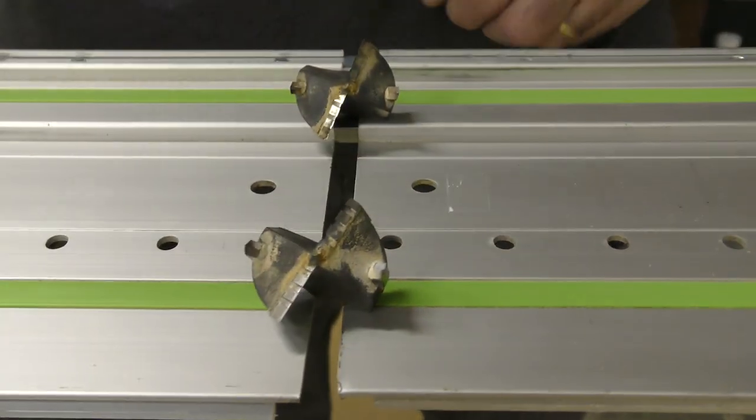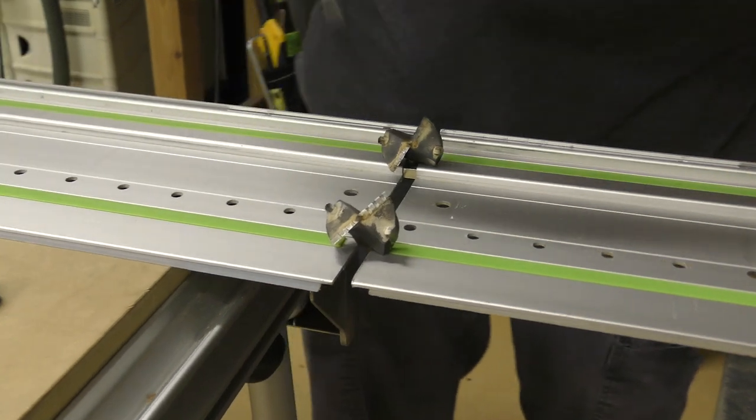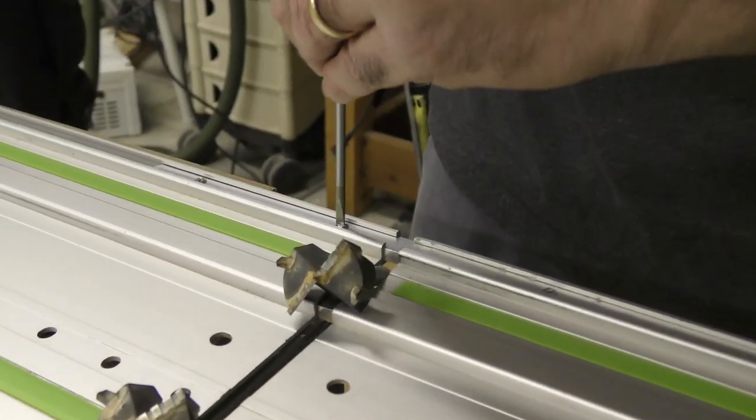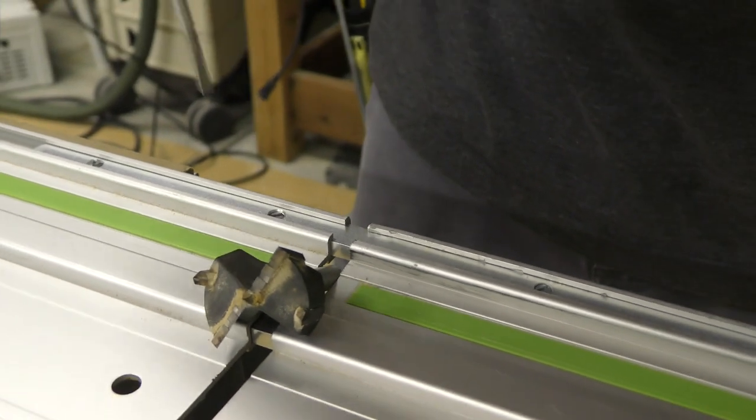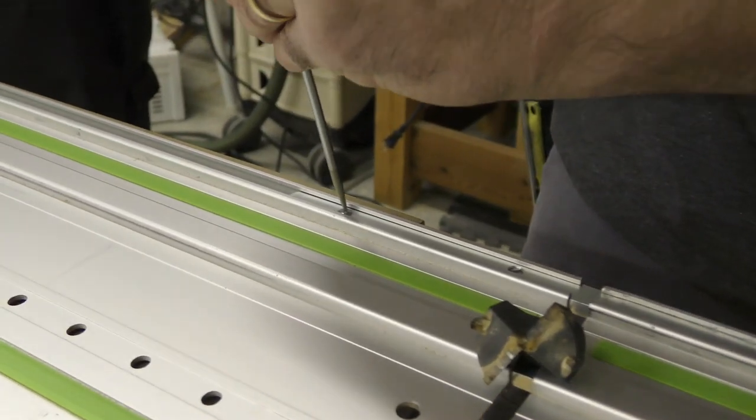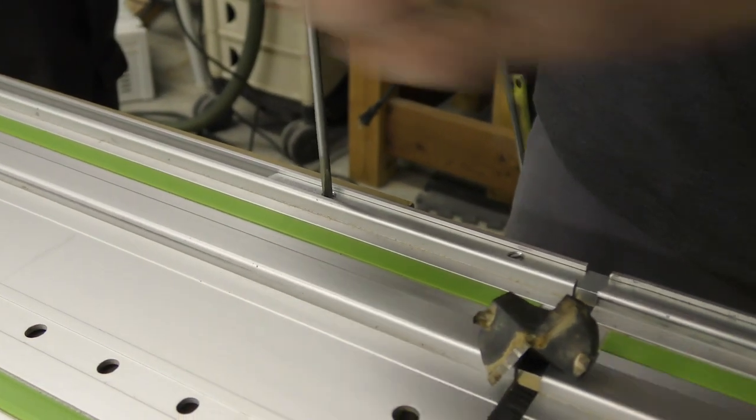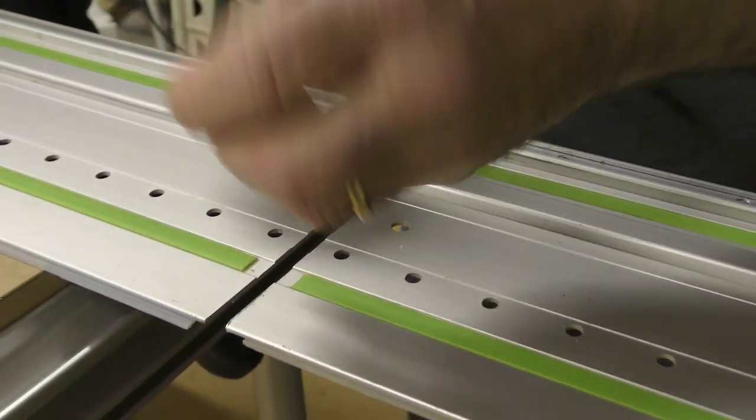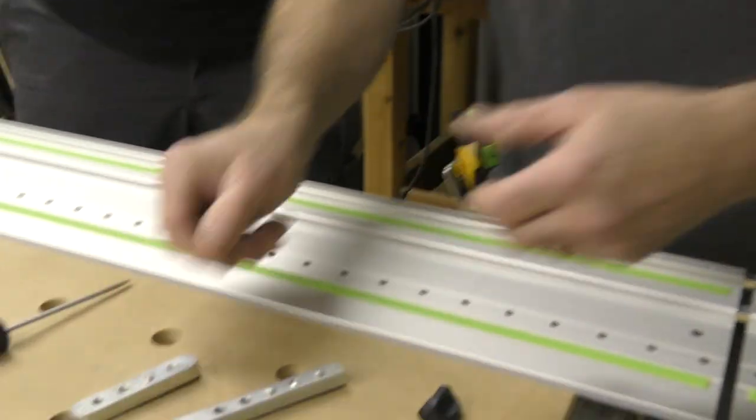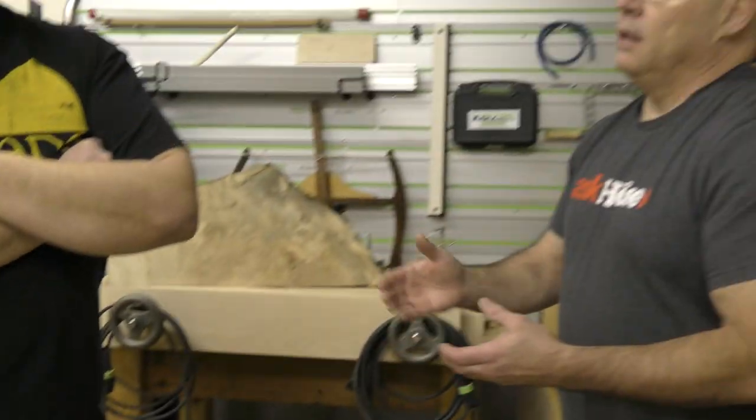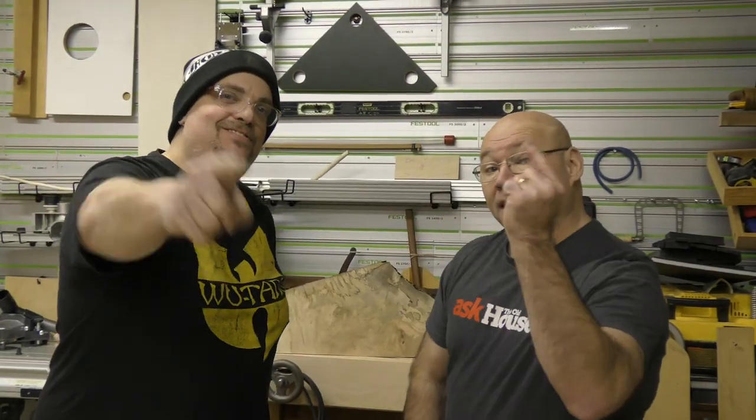I use the shank of the router bit as a gauge block, and I just tighten it up. And now it's spaced exactly at, from here to here, 32 millimeters. Now whether you have the new end stops or the old ones, you're able to put them together. And as we end all our videos, be positive and stay sharp.